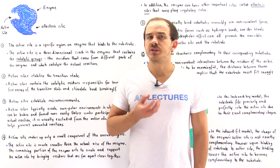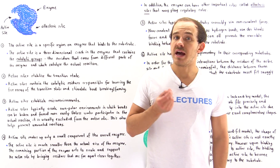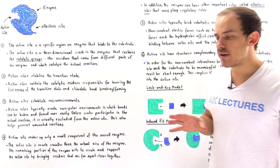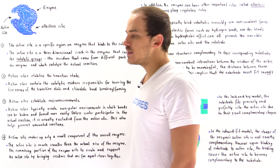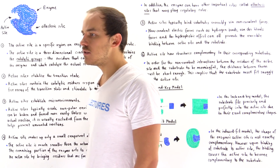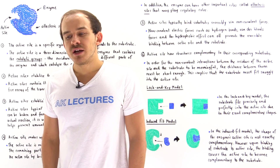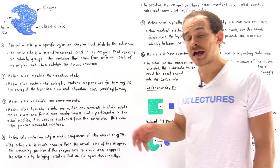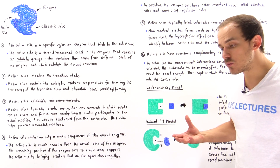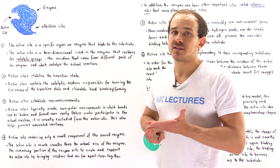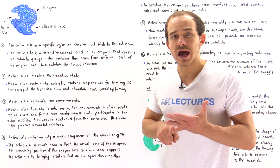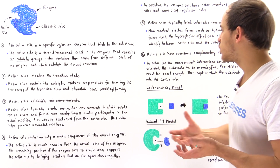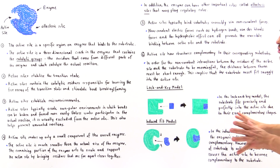Previously we introduced the concept of the active site and we said that all the different types of enzymes found inside our body and inside our cells have active sites. Just like all enzymes have similar properties, the active sites of enzymes also have important similar properties, and this is what we're going to focus on in this lecture.